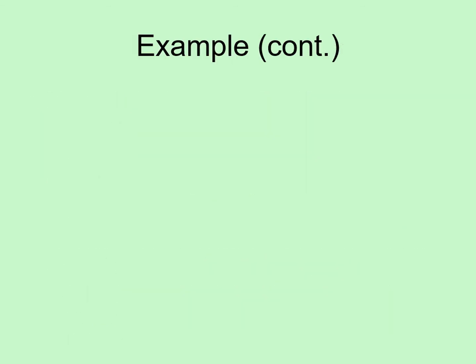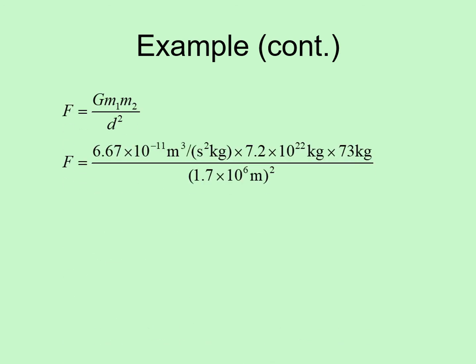Now we can go ahead and do the calculation. As usual, we write down the formula. Then we put in all the values with their units, including the gravitational constant. This is a good place to check that we've got all the units right here. Make sure that the distances are all in meters, the masses are all in kilograms, and the times are all in seconds. And wherever you can, try to make sure that the values look realistic.